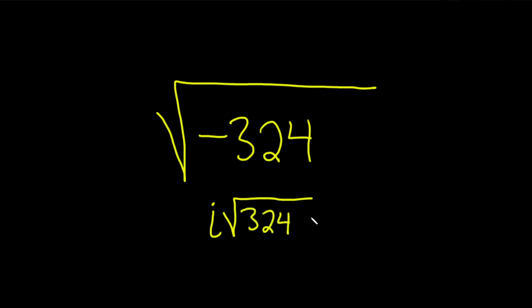Then the square root of 324, that's 18. So this is i times 18, but no one leaves the i in the front like this. It's really 18i. That's how you want to write your answer.